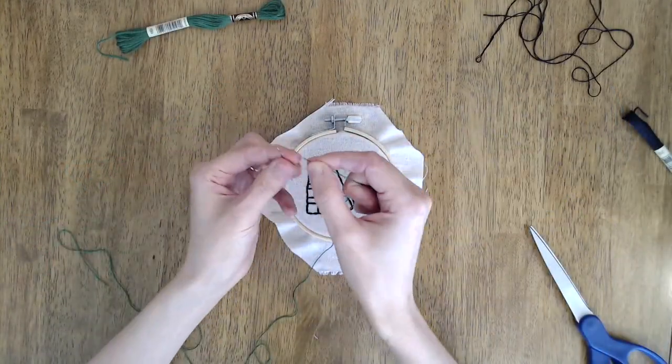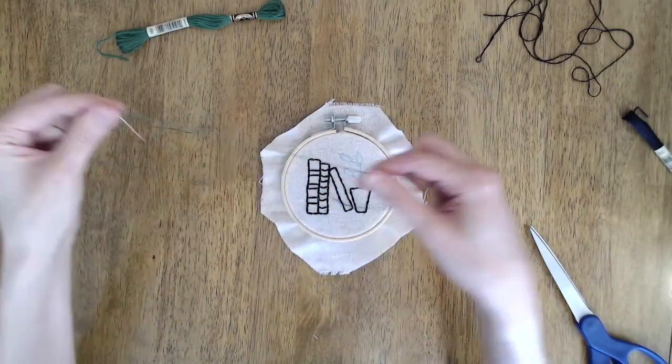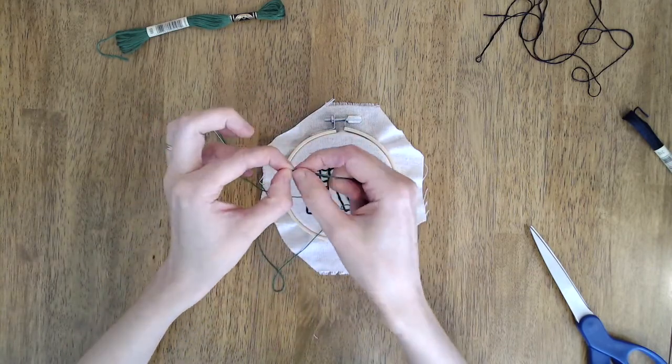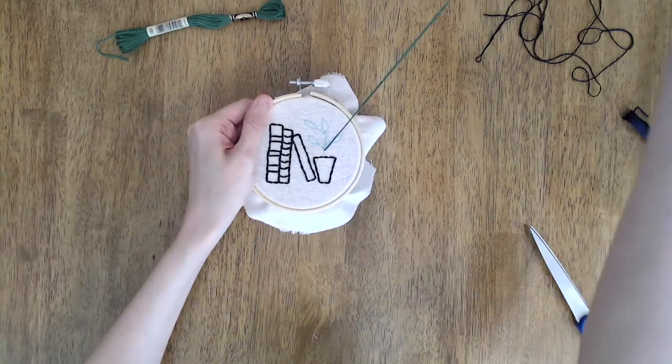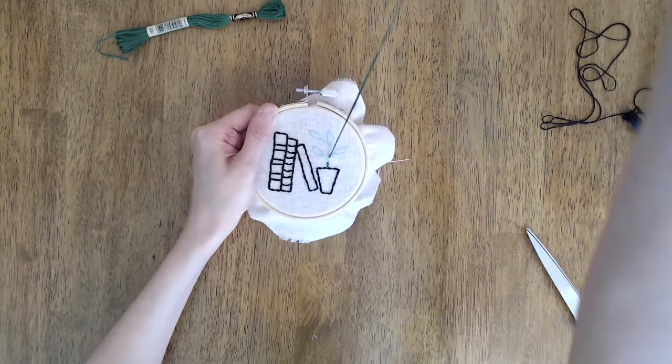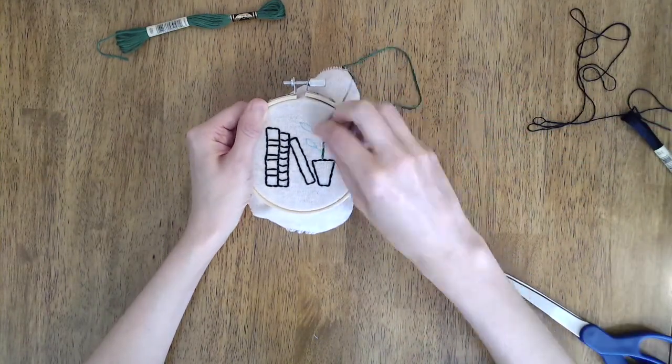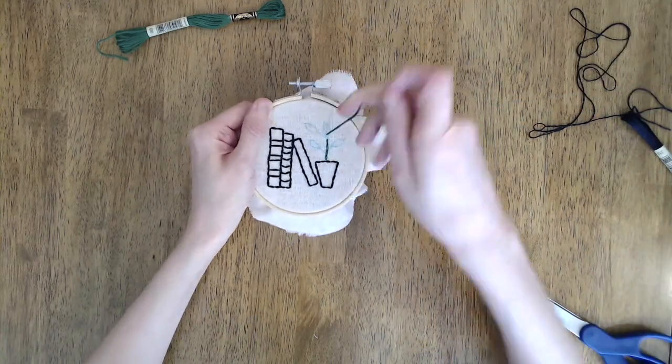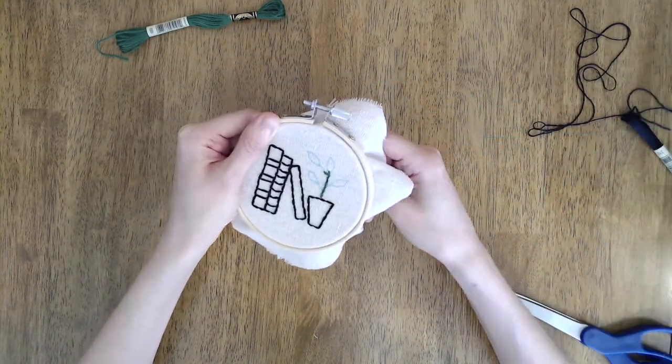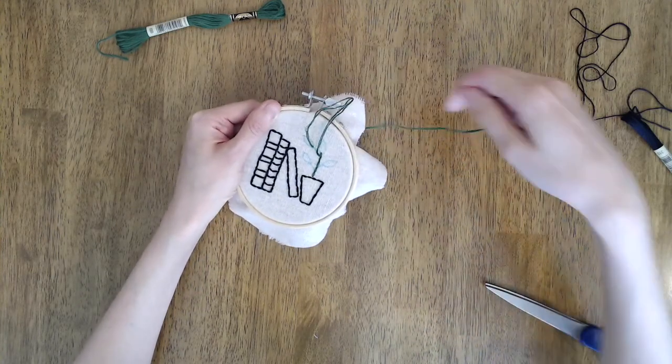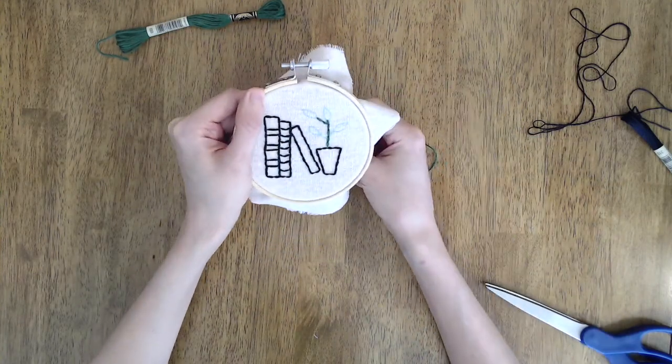Okay, so at this point I've outlined the pattern with the backstitch in black. And I'm going to switch to using the green floss for the rest of the pattern. First I'm going to use the backstitch for the stem of the plant. And then I'm going to use the satin stitch for the leaves.